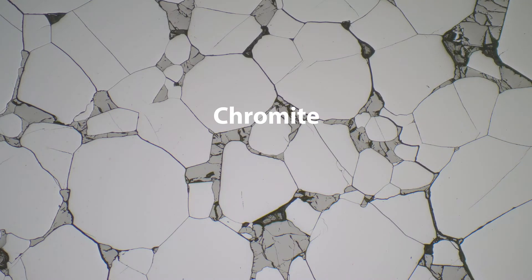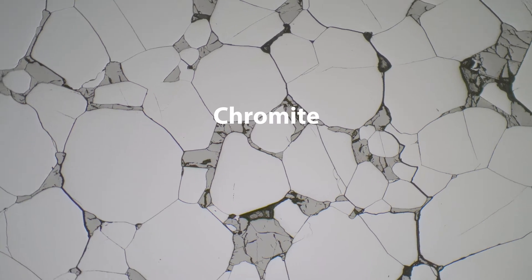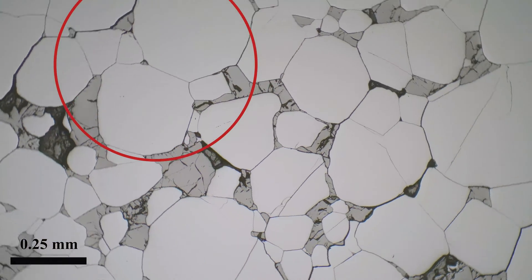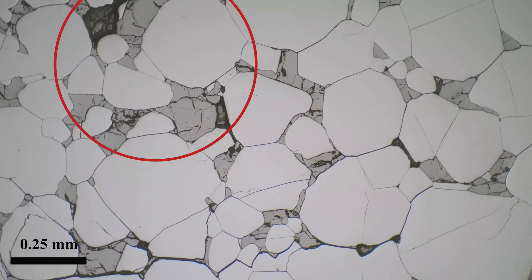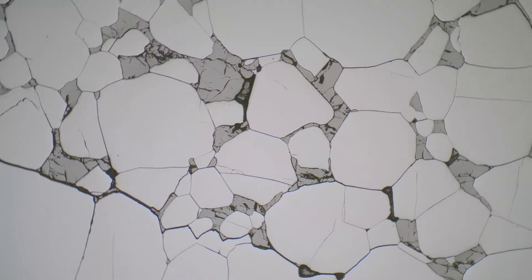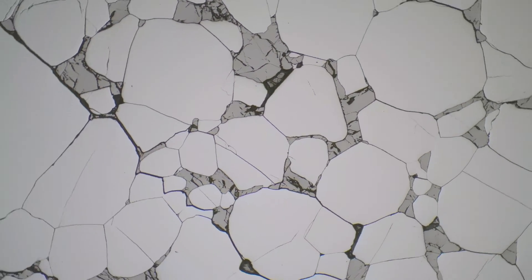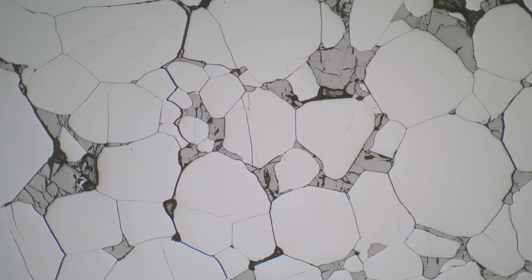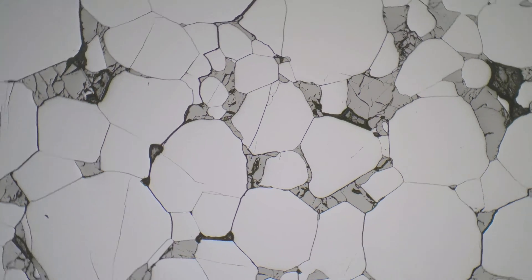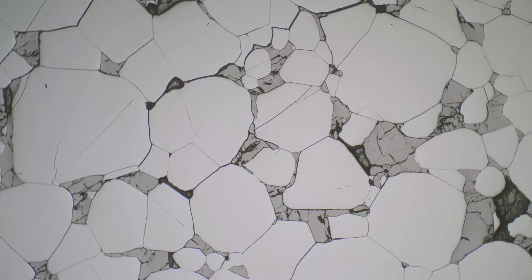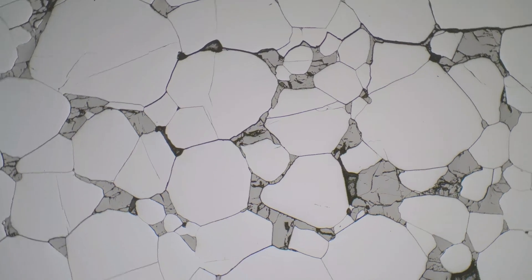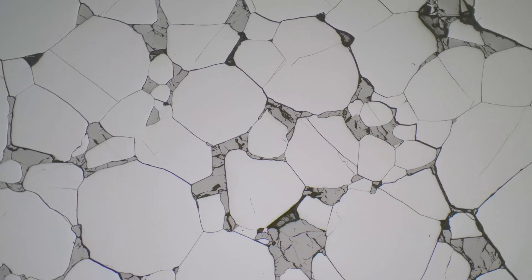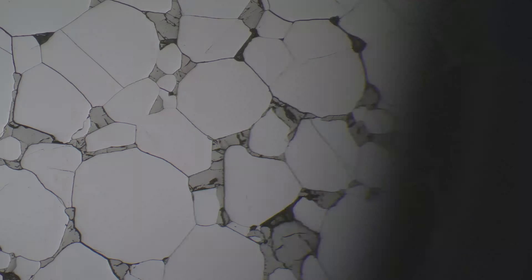Today we're looking at the mineral chromite. This is found in a lot of magmatic systems and it's the light gray mineral that we see in this slide. It's a cubic mineral and as you can see, as I spin the slide, it's not changing in color, so it's non-pleochroic.